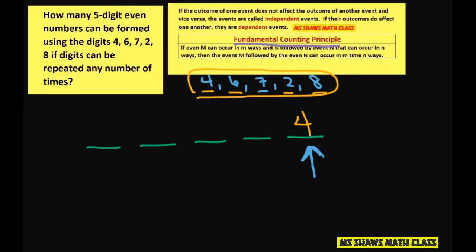Now for the other positions, we can repeat any of the numbers. The other positions don't matter. We can repeat digits, so we have 5 choices for each of the other positions. So you just put 5 for all the others.